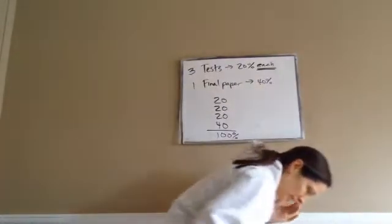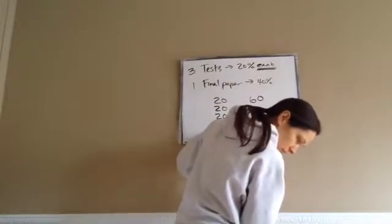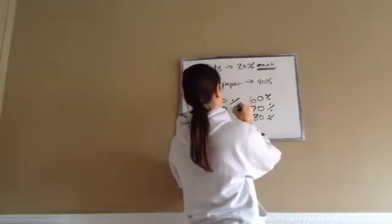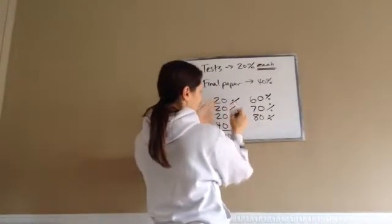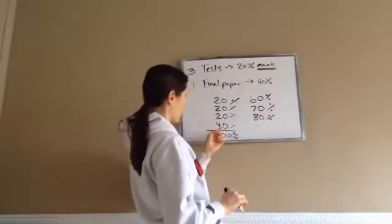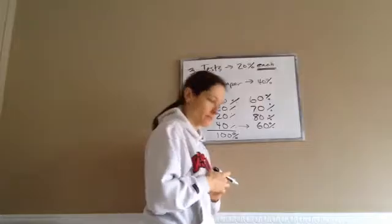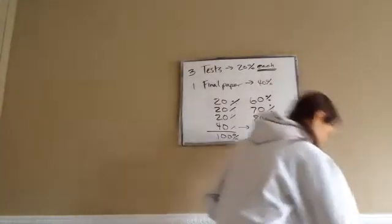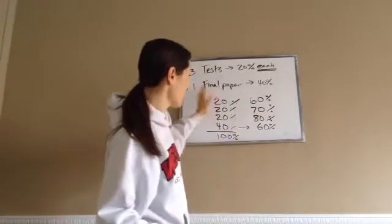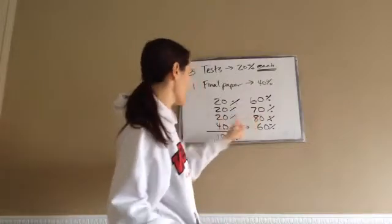Smith's scores on the three tests were 60%, 70%, and 80%, all weighted 20% each. His score on the final paper, which was weighted 40%, was 60%. Now, when working with math you can never leave a percent as a percent — it has to be written as a decimal or fraction. So 20% is 0.20. So we calculate: 0.20 times 0.60, plus 0.20 times 0.70, plus 0.20 times 0.80, plus 0.40 times 0.60.